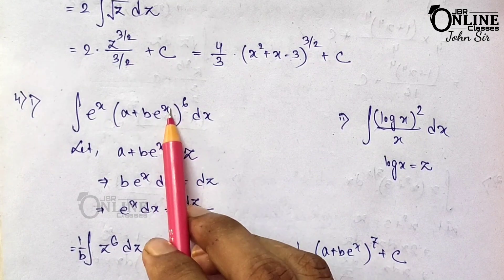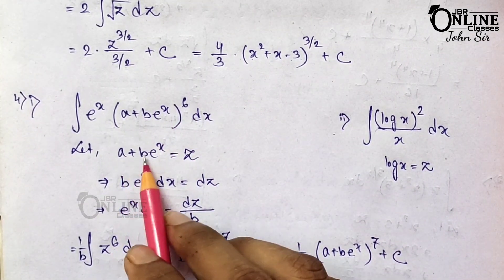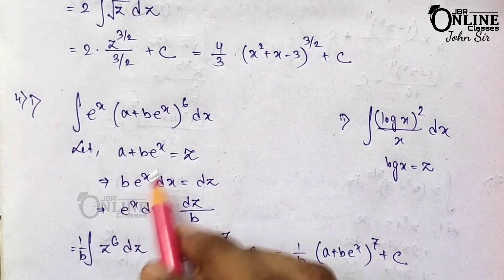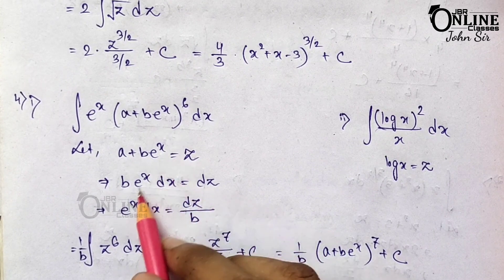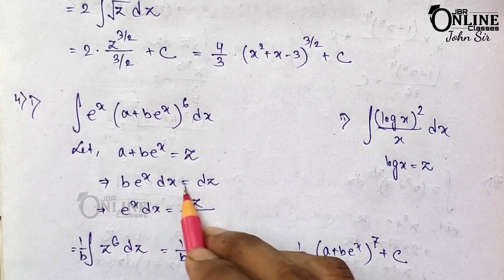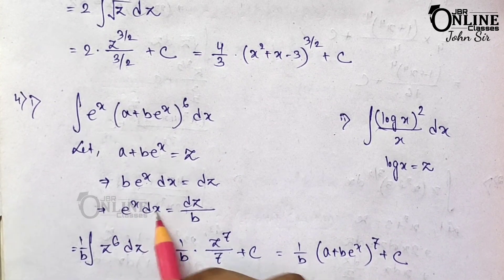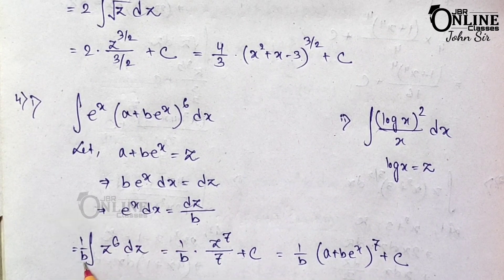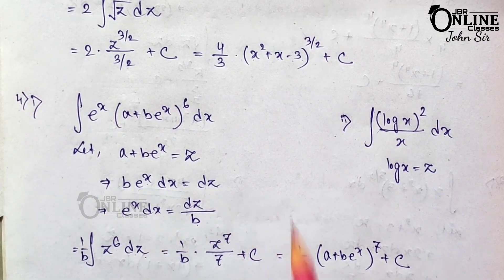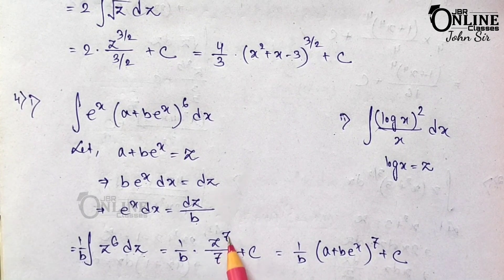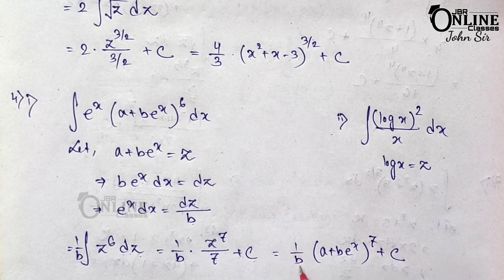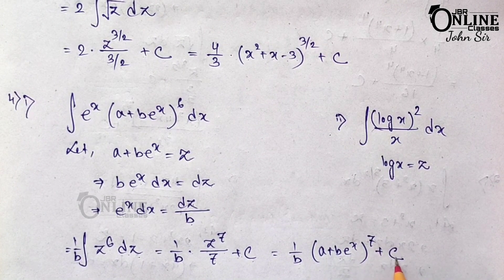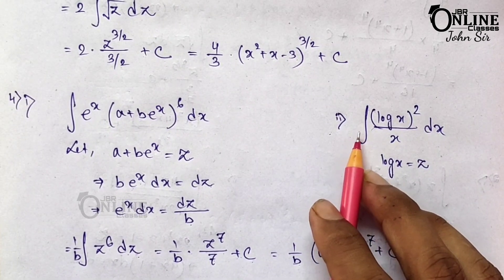Problem 4.1: ∫eˣ(a + beˣ)⁶ dx. Let a + beˣ = z. The derivative is b·eˣ, so eˣ dx = dz/b. The integral becomes (1/b)∫z⁶ dz = (1/b) · z⁷/7 + C = (1/7b)(a + beˣ)⁷ + C.